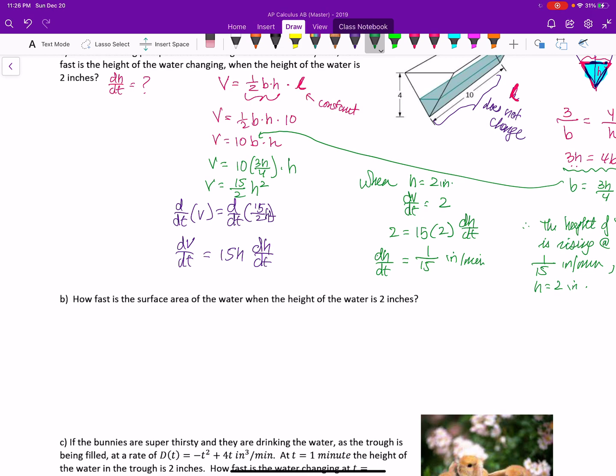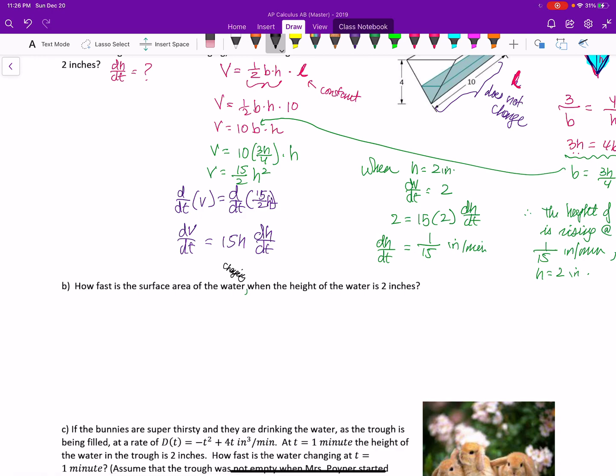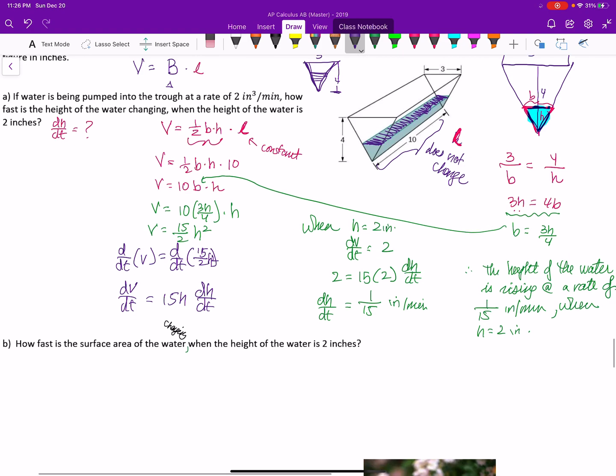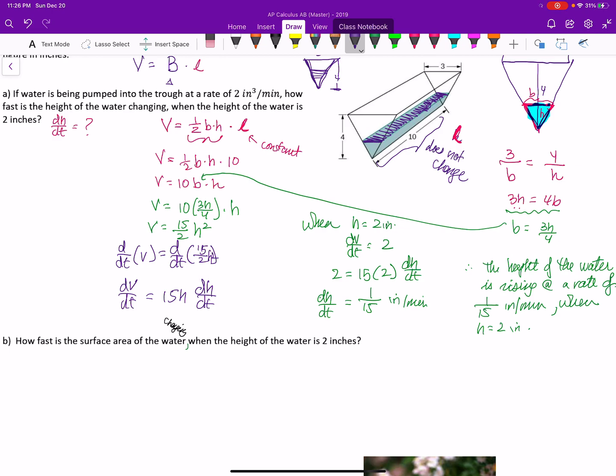How fast is the surface area of the water changing when the height of the water is 2 inches? The surface area now is going to be, if I go up here, the surface area is literally going to be this rectangle right here, just that piece there. So that means that across here, we define that as lowercase b. And the length of that side there is 10.